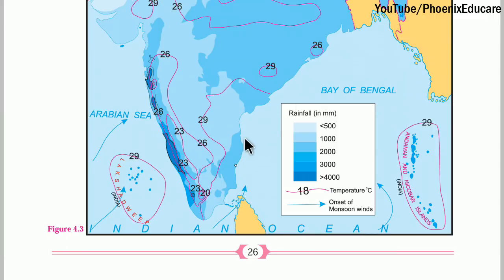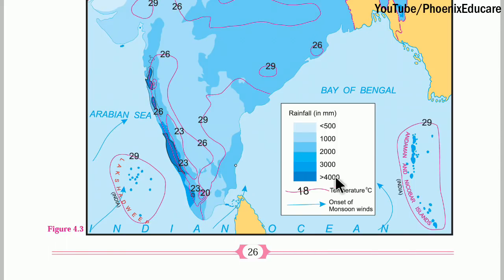This region is the region of the Bay of Bengal and Arabian Sea. This region is India, and this region is the Western Ghats. So Western Ghats is acting as a barrier. Because of this, this region is getting more rainfall — more than 4000 mm.